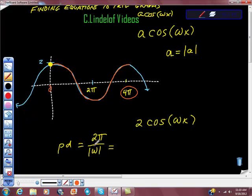So what we have is this: our period is 4π. And 4π equals 2π over absolute omega.